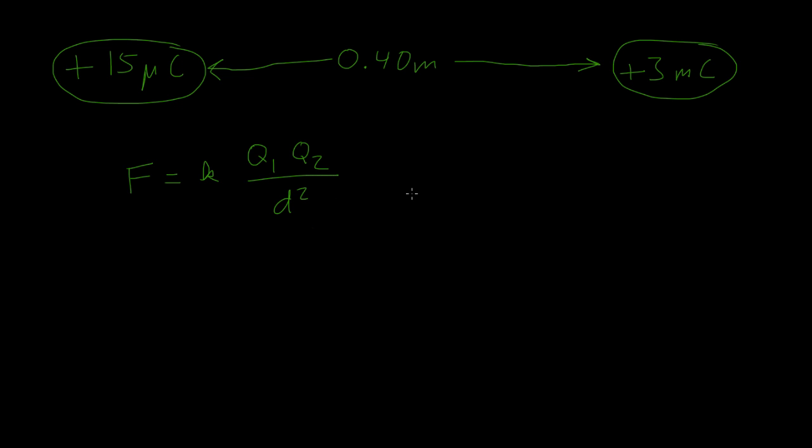And recall that the proportionality constant is 9 times 10 to the ninth newtons meters squared per coulombs squared.